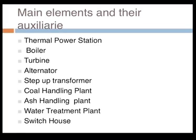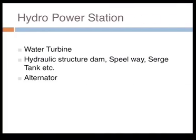In the alternator, we have a ventilating fan. The step-up transformer has an oil pump and air blower. Coal handling plant has wagon tippler, elevator, screen, hoist, magnetic separator, coal crusher, and belt conveyor. Ash handling plant has scrap conveyor and elevator. Water treatment plant has raw water pump, soft water pump, sludge pump, and distilled pump. The switch house has crane, motor generator set, booster, oil pump, and oil purifier.